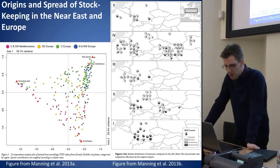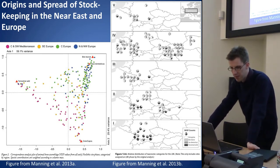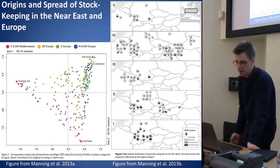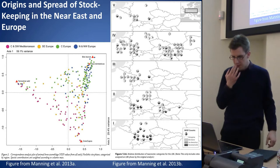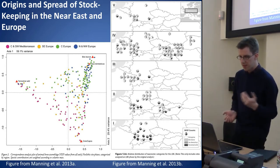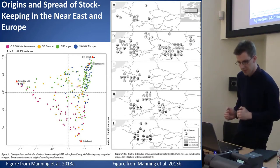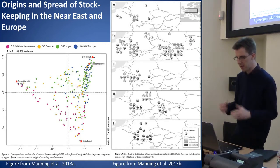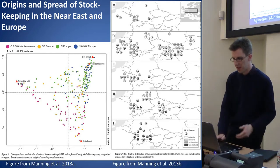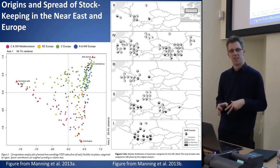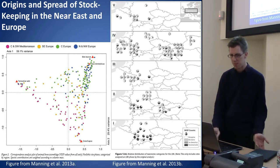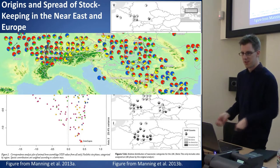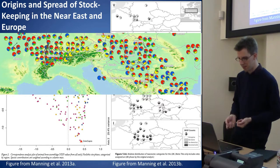Another example from a couple of years ago is work by Katie Manning et al. at UCL looking at the origins and spread of domestic agriculture from the Near East across Europe. In the correspondence analysis on the left, there's a clear spatial structure: sites from central and southwest Mediterranean go to one side of the plot, whereas sites from central and northwest Europe go to the top right. But when they tried to translate that into spatial analysis, they ended up with a mass of pie charts, and you're kind of losing, having done that analysis, all the information by just putting up pie charts.